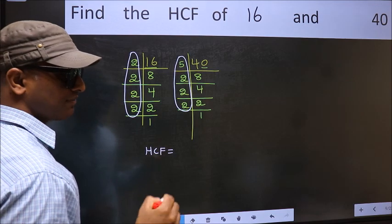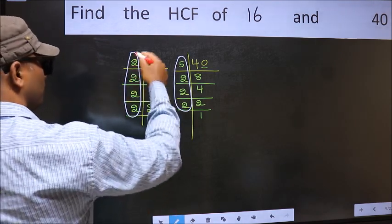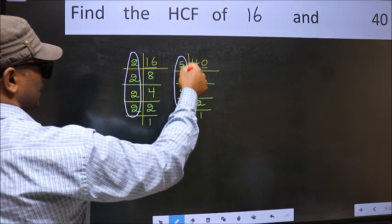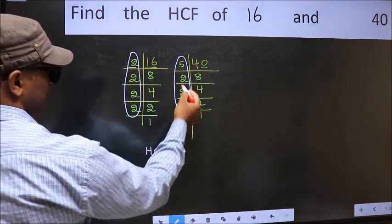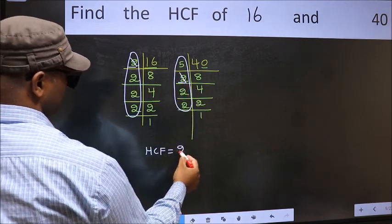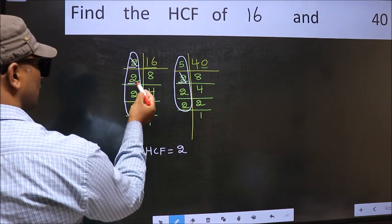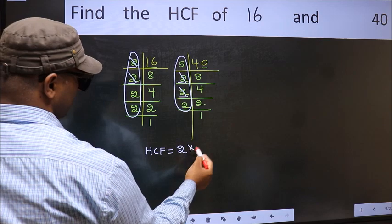So now let us find the numbers which should be present here and here. Starting with the number 2. Do we have 2 here? Yes. So cut 2 right here. Next number 2. Do we have 2 here? Yes. So cut 2 right here.